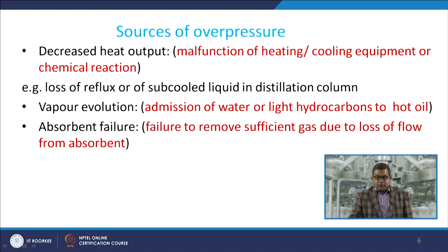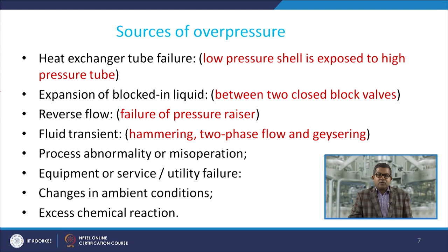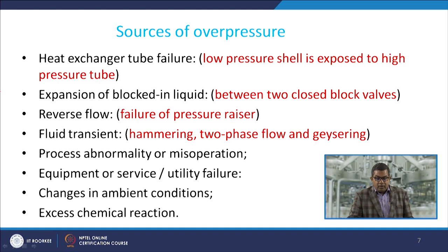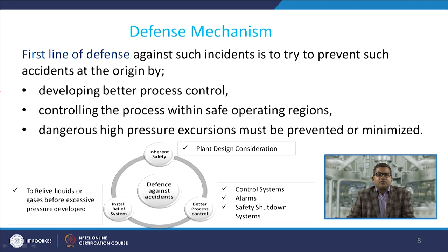Other sources include absorbent failure — failure to remove sufficient gas due to loss of absorbent flow; heat exchanger tube failure where a low-pressure shell is exposed to high-pressure tube; expansion of blocked-in liquid between two closed block valves; reverse flow due to failure of a pressure riser; fluid transients such as hammering, two-phase flow, or geysering; process abnormality or misoperation; equipment or utility failure; changes in ambient conditions; and excess chemical reactions.